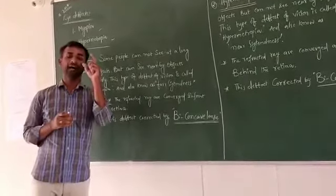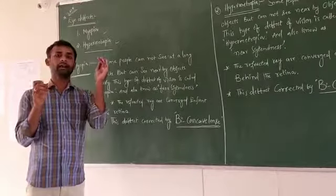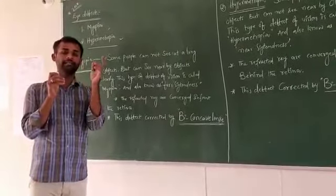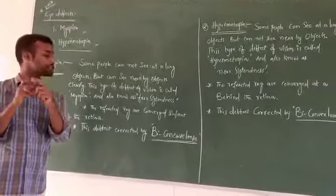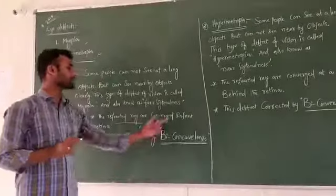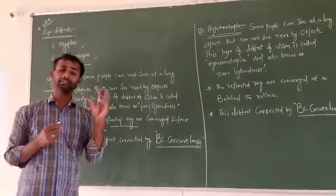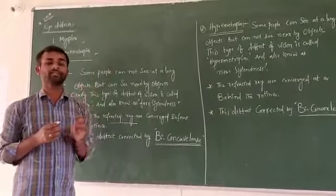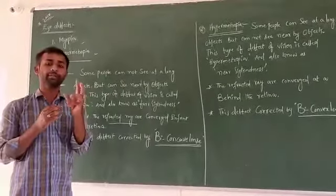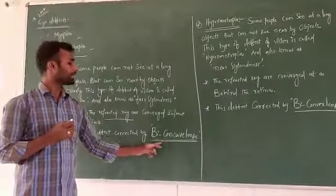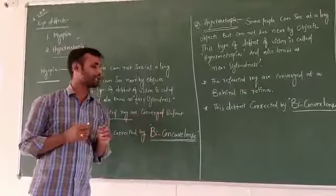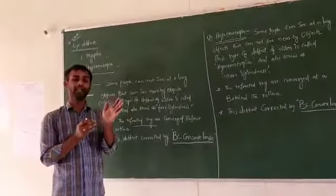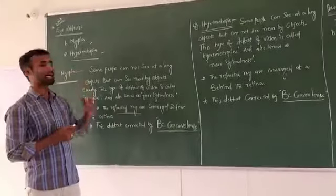How does myopia form in the eye? Light rays incident on the eye lens — after refraction, the refracted rays converge in front of the retina, not on it. Because of this, a clear image of distant objects does not form on the retina. To reduce this defect, a biconcave lens is used in front of the eye.